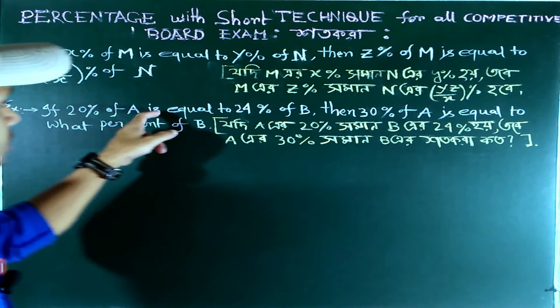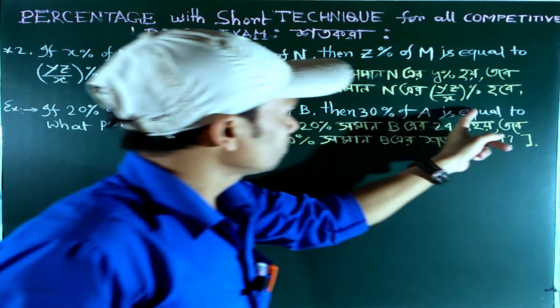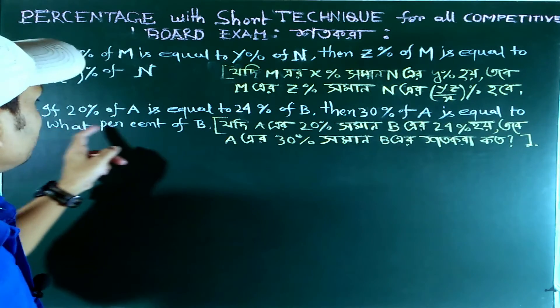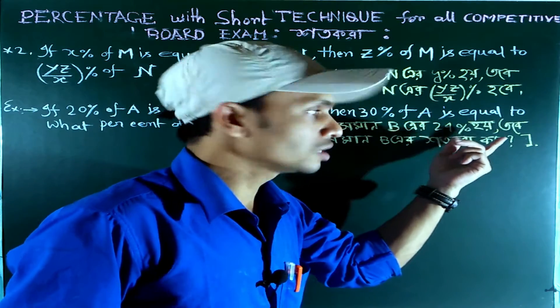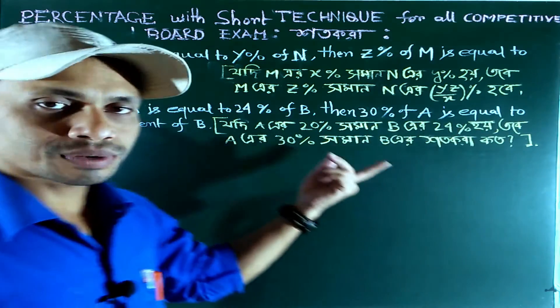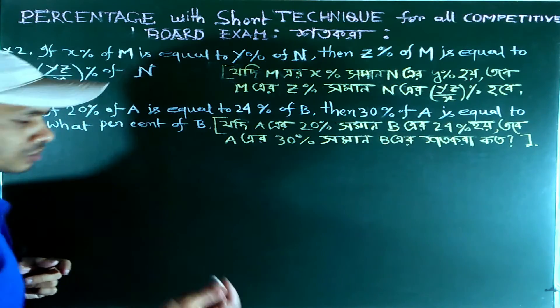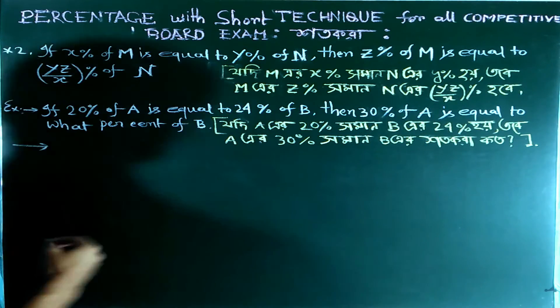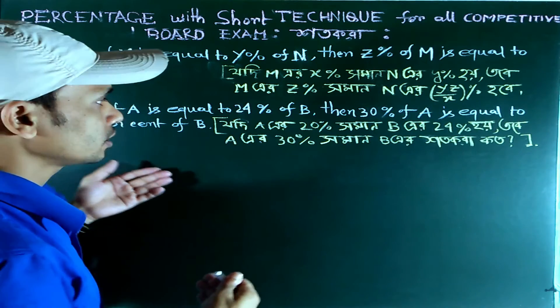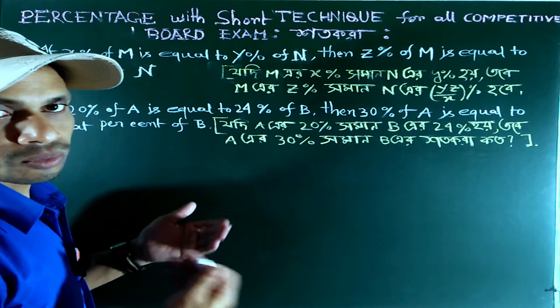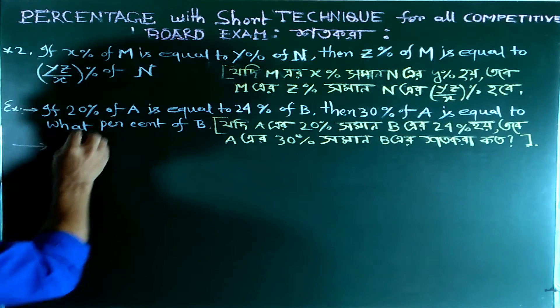The problem is: If 20 percent of A is equals to 24 percent of B, then 30 percent of A is equals to what percent of B? We can solve this using the general method, but it takes time. Instead, I'll show you both the theorem method and the general calculation approach so you can understand the concept better.